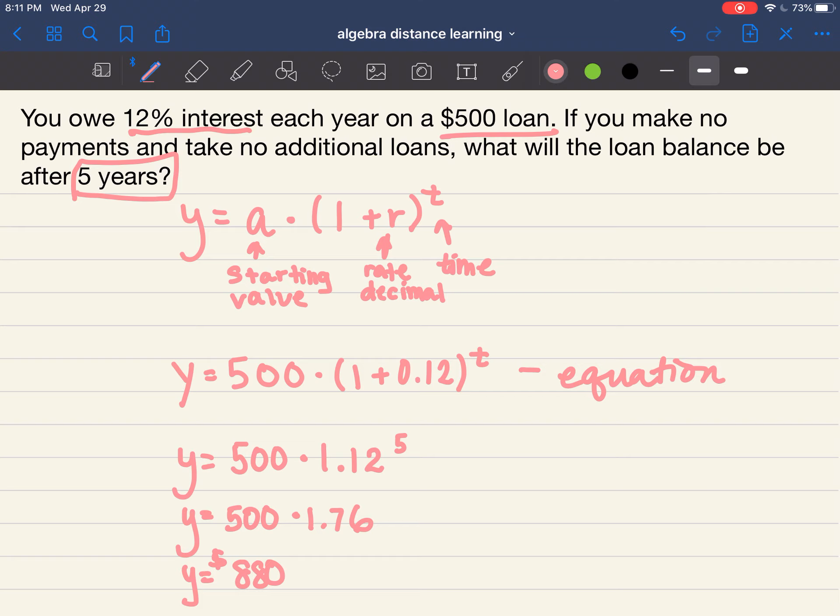So my final answer is that if you make no payments on those loans, your balance will be $880 after 5 years.